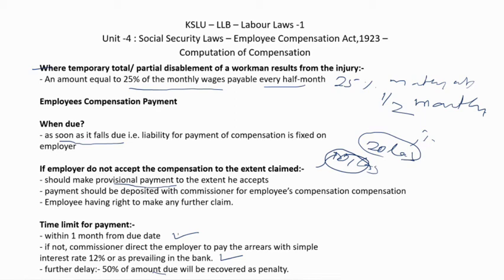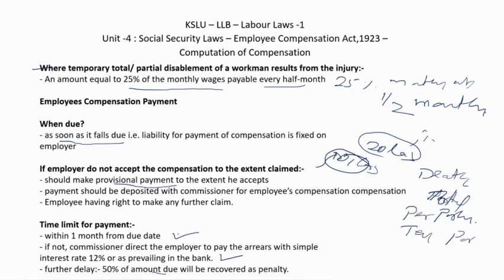To summarize compensation types: compensation at the time of death, total disablement, permanent partial disablement, and temporary partial disablement.